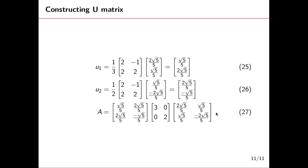Multiplying these three matrices — U, Sigma, and V-transpose — gives us back our original matrix A. We have come to the end of this lesson. I believe this video is simple and helpful, and I'd like you to please like, subscribe, share this video, and leave your comments down below.